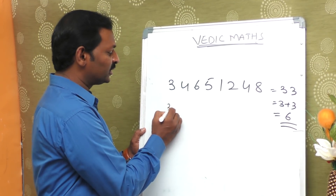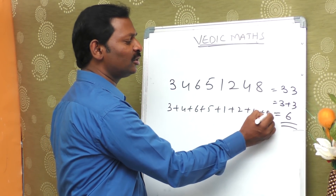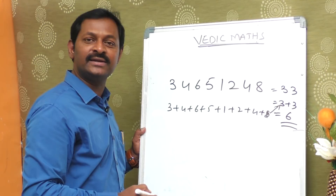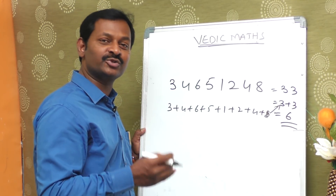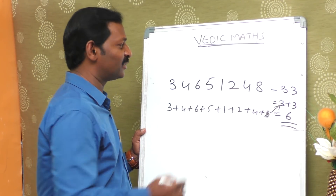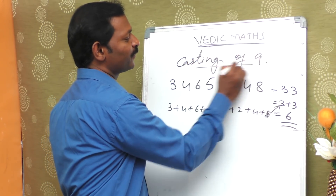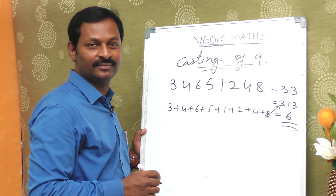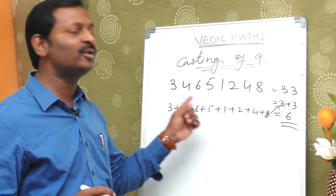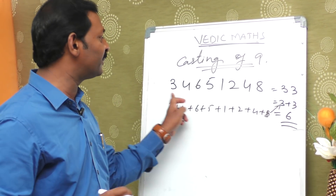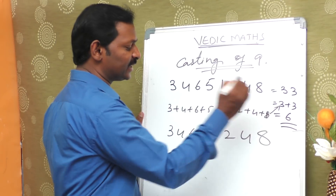3 plus 4 plus 6 plus 5 plus 1 plus 2 plus 4 plus 8 is equal to 33. 3 plus 3 equals 6. Now, what is the casting of 9? That means we have to cast out the number 9. The numbers 3, 4, 6, 5, 1, 2, 4, 8 — we cast out 9s.